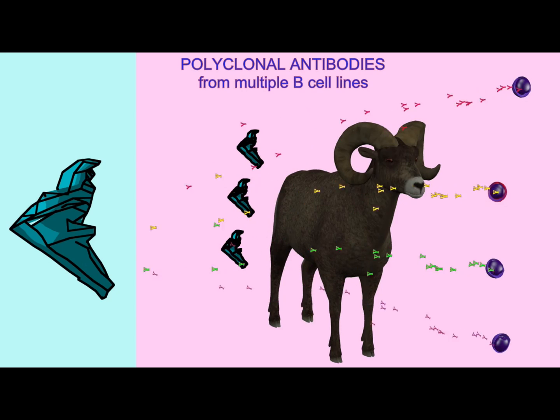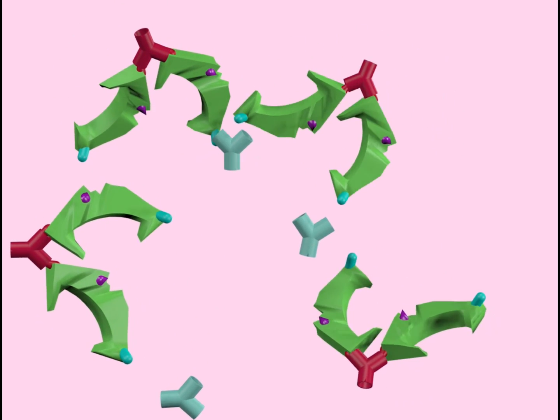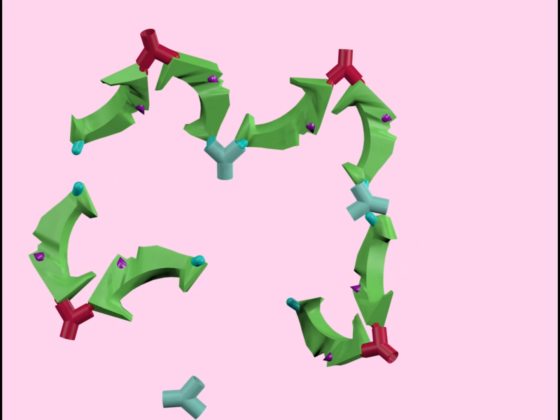Instead, polyclonal antibodies from multiple B cell lines may produce different antibodies binding to different parts of the antigen molecule—different epitopes. These could then complex together and form a solid.